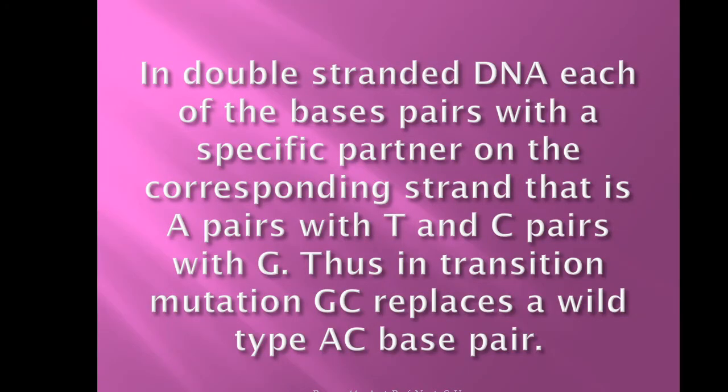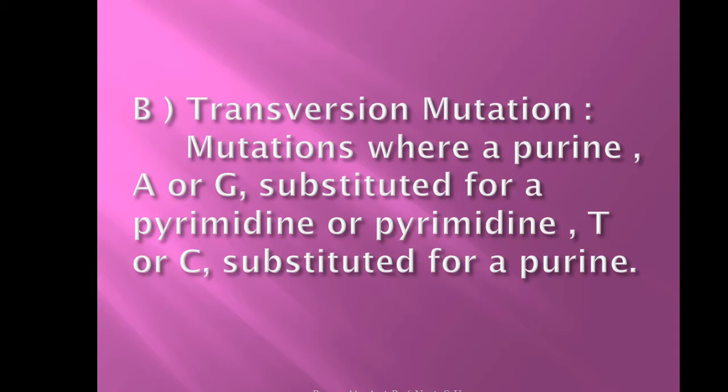In double-stranded DNA, each base pairs with a specific partner: adenine always pairs with thymine, and guanine always pairs with cytosine. When a transition mutation takes place, a guanine-cytosine base pair replaces a wild-type adenine-thymine base pair. This is called a transition mutation.